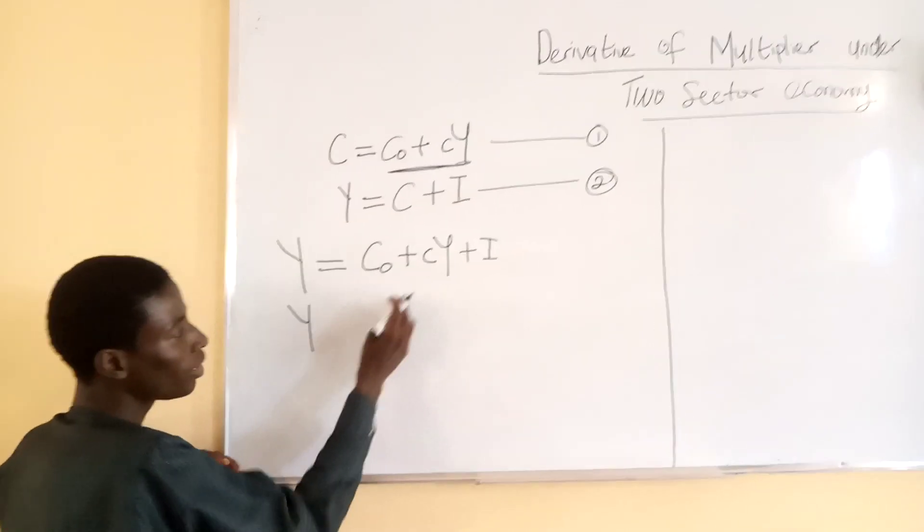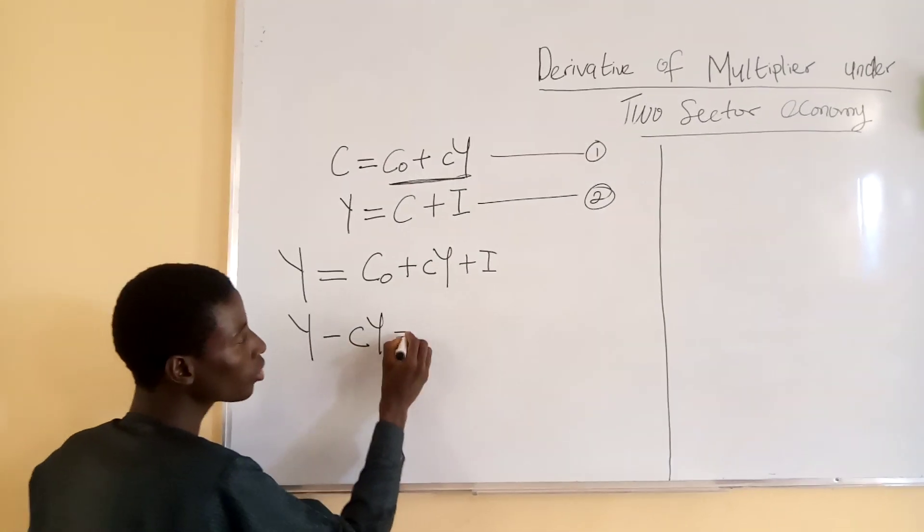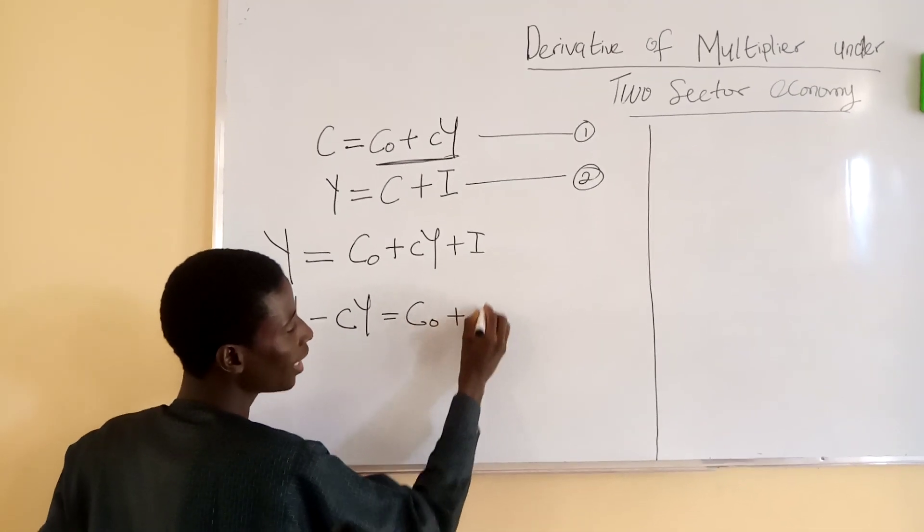We have Y and cY. Coming to the other side, we have Y minus cY equals C sub zero plus I.